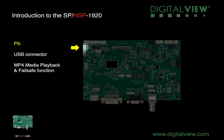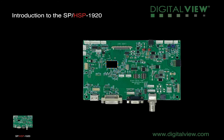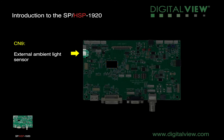IR1 is for the infrared sensor when using DV remote control. P5 is an external USB connector. This can be used for MP4 media playback or as a fail-safe in case you want to display a message if a signal input is lost. CN9 is for the external ambient light sensor connection.